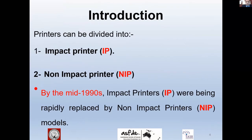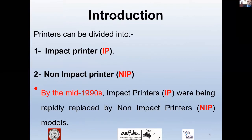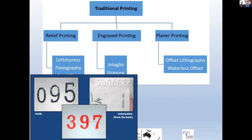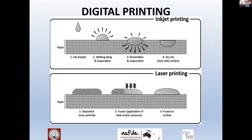Let's start with the introduction. Printers can be divided into impact printers and non-impact printers. By the mid-1990s, impact printers were being rapidly replaced by non-impact printer models. Traditional printing can be divided into relief printing, which includes letterpress; engraved printing, which includes intaglio or gravure; and planar printing, which includes offset lithography or waterless offset. Digital printing mainly can be divided into inkjet printing and laser printing, as shown in pictures of the mechanism of inkjet and laser printers.